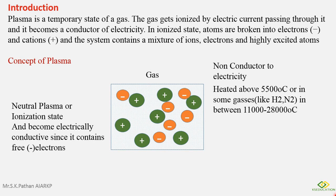And this state is called neutral plasma or ionization state. Once the gas enters into ionization state, it means that their ions are broken up and they are broken into electrons and cations.